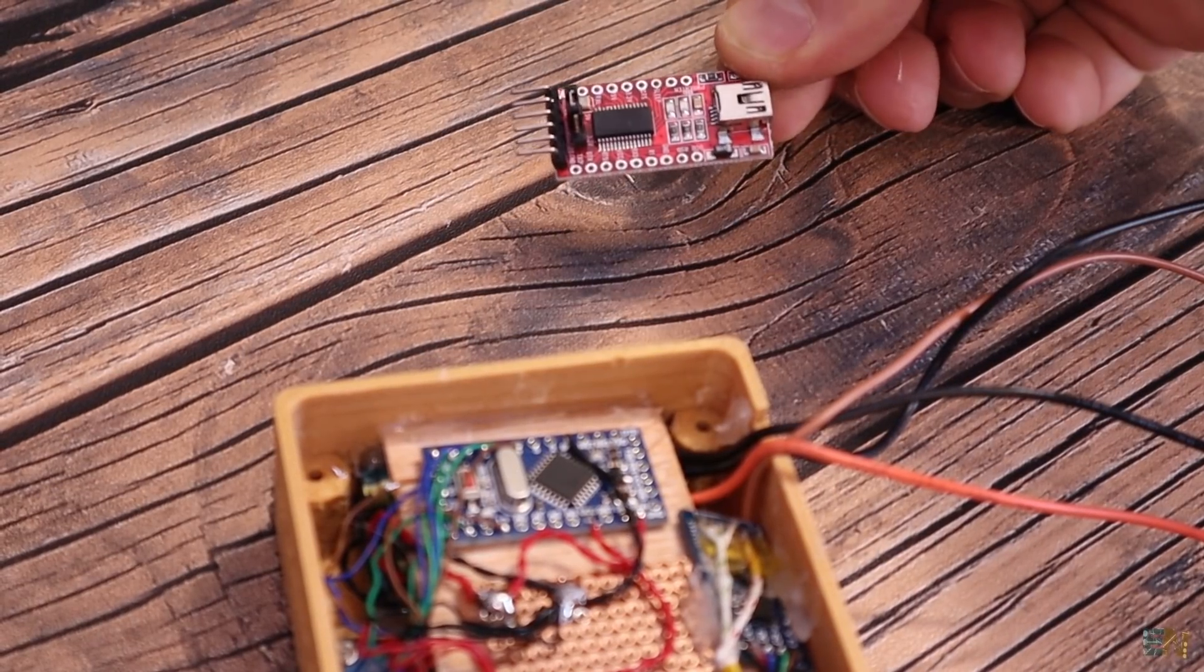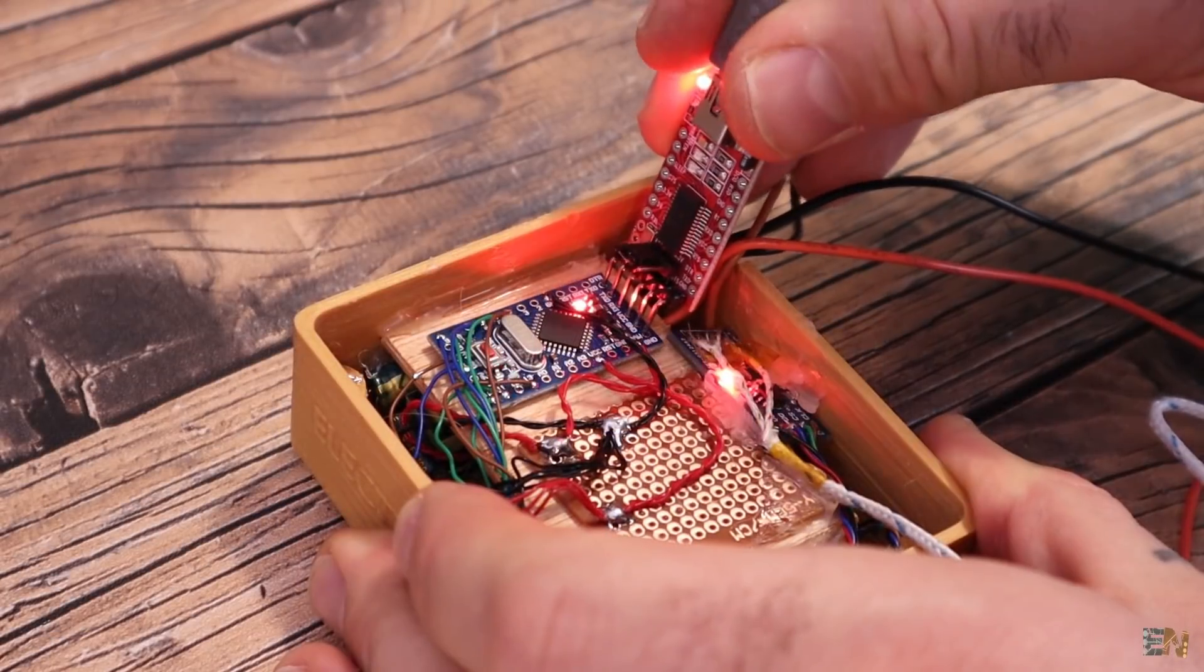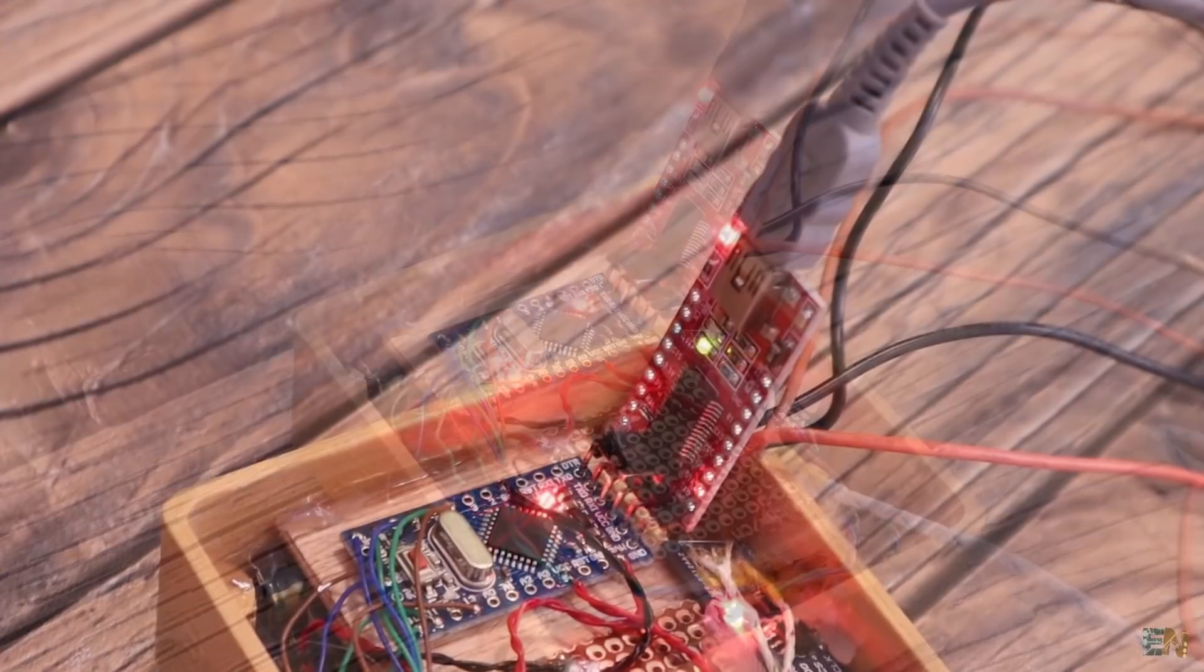Now that everything is connected, get the FTDI programmer. Connect it to the Pro Mini, download the code from below and upload it.